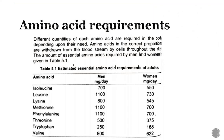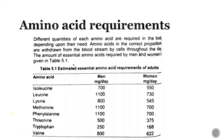Let's see what the requirement of amino acids in our body is. Different quantities of each amino acid are required in the body depending upon their need. Amino acids in the correct proportions are withdrawn from the bloodstream by cells throughout the day. The amounts of essential amino acids required by men and women are given in a table. Tryptophan in the body is less than the other amino acids.